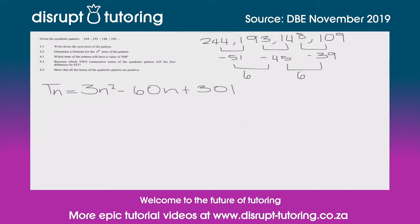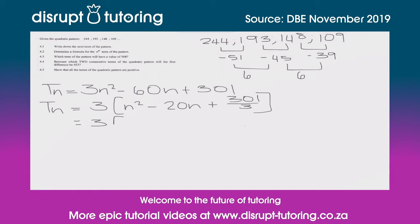So we need to do something that transforms this general term into something we can work with. One way is completing the square. The first thing we do is pull out a 3, and we're left with n² − 20n + 301, all divided by 3. Now let's complete the square: we open our square brackets, square root the first term, halve the second term to get 10, then immediately square that — so that's minus 100.